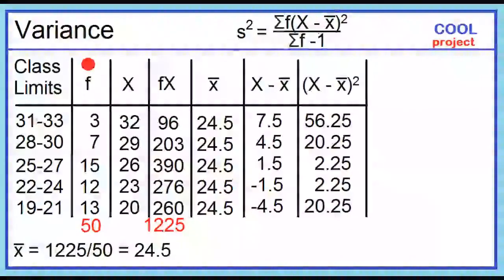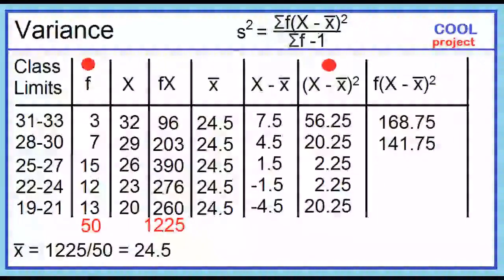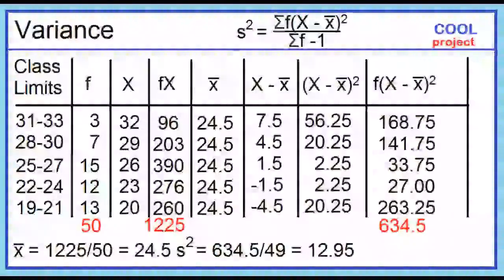Next, multiply each frequency by its corresponding squared deviation. 3 times 56.25 is 168.75. 7 times 20.25 is 141.75. 15 times 2.25 is 33.75. 12 times 2.25 is 27. 13 times 20.25 is 263.25. The sum is 634.5. Using the formula, the variance equals 634.5 divided by 49, which equals 12.95.